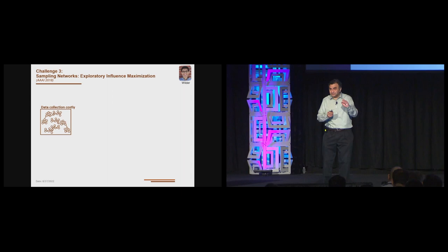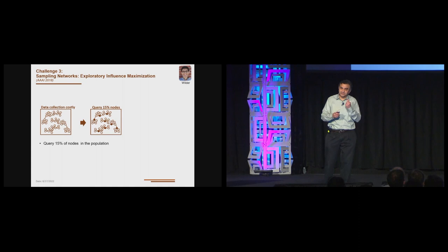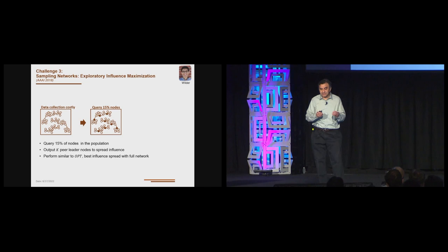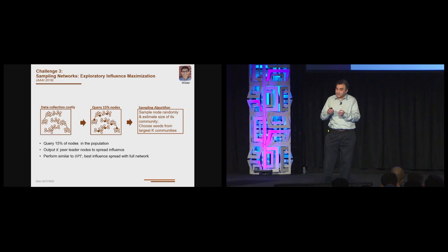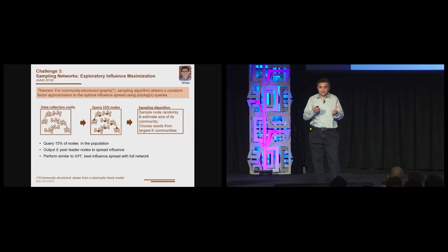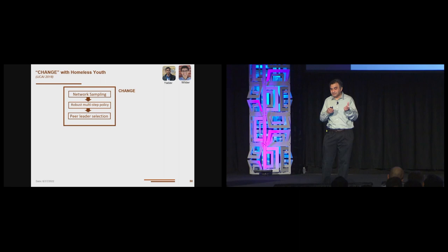We could do that, but this is very costly. And in fact, if you want to take this program to other cities, this is not going to work. So if we can come up with a technique where we sample a small fraction of this network, say 15% of the youth, we go and ask them who are your top five friends, and given this small sample, we then choose peer leaders, K peer leaders to spread influence. And the goal here is to perform similar to the optimal possible had we known the entire social network ahead of time. So we do this by this sampling algorithm. We sample nodes randomly and then estimate the sizes of the communities that the nodes belong to and then choose seeds from the largest K communities.